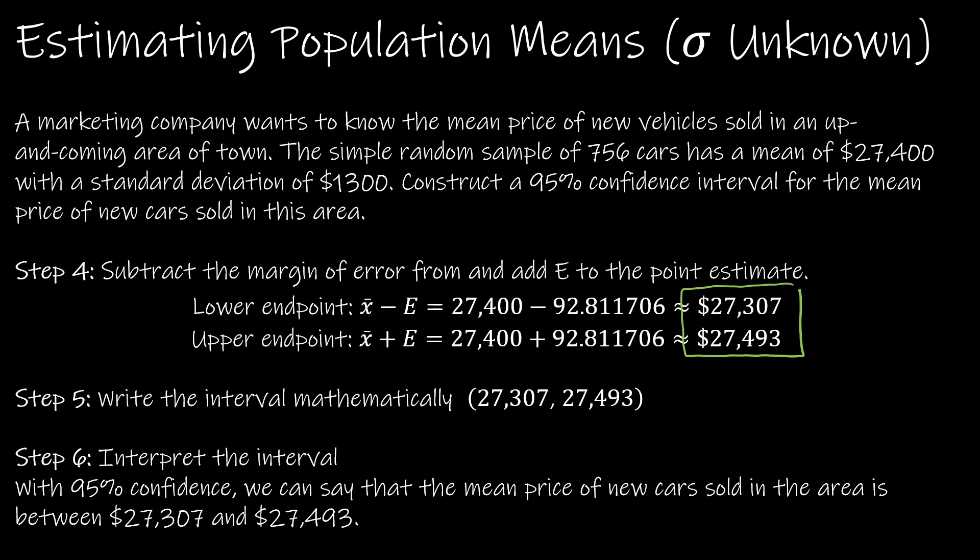We're going to write the interval mathematically, which just means write it in interval notation: ($27,307, $27,493). And our interpretation: we're looking at a 95% confidence level, so we're 95% confident that the mean price of new cars sold in that area is between $27,307 and $27,493.